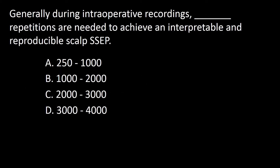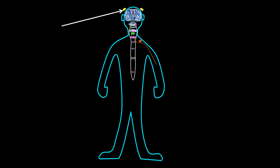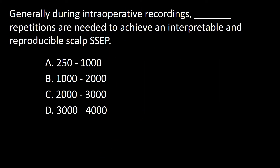Next question: generally, during intraoperative recording, dash repetitions are needed to achieve an interpretable and reproducible scalp somatosensory evoked potential. A: 250 to 1,000, B: 1,000 to 2,000, C: 2,000 to 3,000, D: 3,000 to 4,000. Scalp recorded potentials following wrist stimulation take about 250 to 1,000 repetitions, but fewer — say 200 — will do if the potential is clear and consistent. So the answer to this question is A.